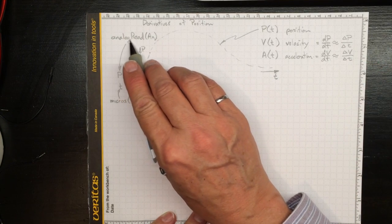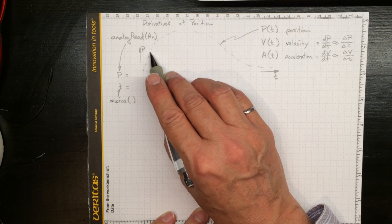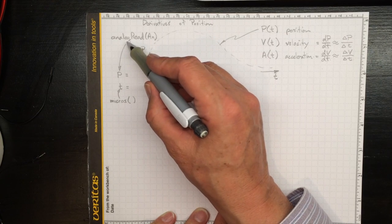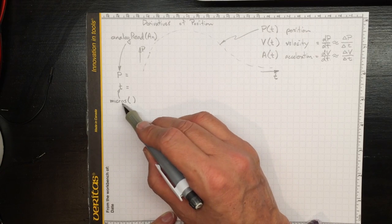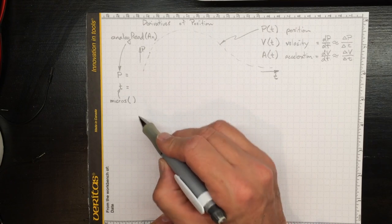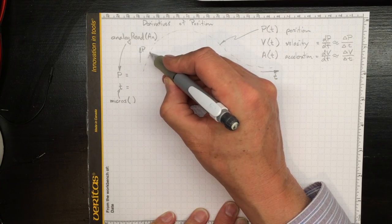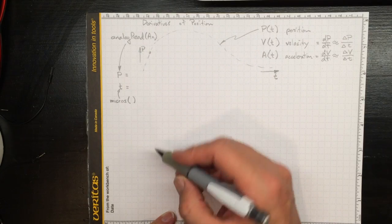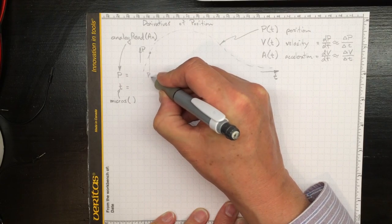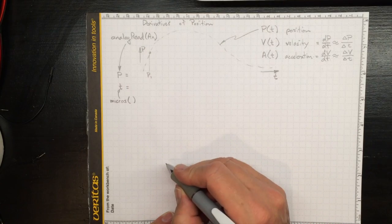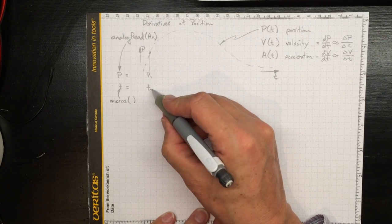So suppose we're making analog readings of position from a potentiometer or some other measurement device. Then that will tell us what the position is any time we go and make a measurement. The micros function will tell us what the time was when we made that position measurement. So if the system was in that position there, we could do an analog reading and find out that the position was that at time one, and that time one was whatever micros said at that time.